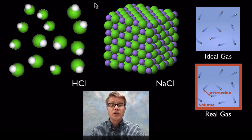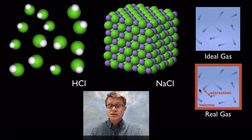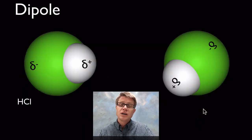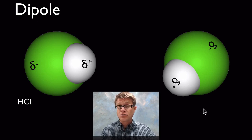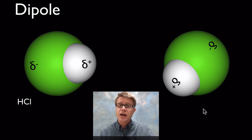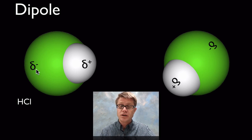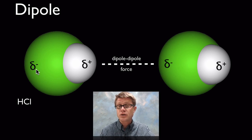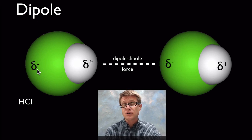This also helps explain the difference between real and ideal gases. Ideal gases are just theoretical, but as gases become closer to liquid and start to condense, we're going to start to have attractive forces — some of which are dipole-dipole forces. For example, hydrochloric acid has one atom of hydrogen and one of chlorine. Chlorine pulls the electron towards itself, giving a partial positive where the hydrogen is and partial negative where the chlorine is. With two of these molecules we get a dipole-dipole force holding them together.